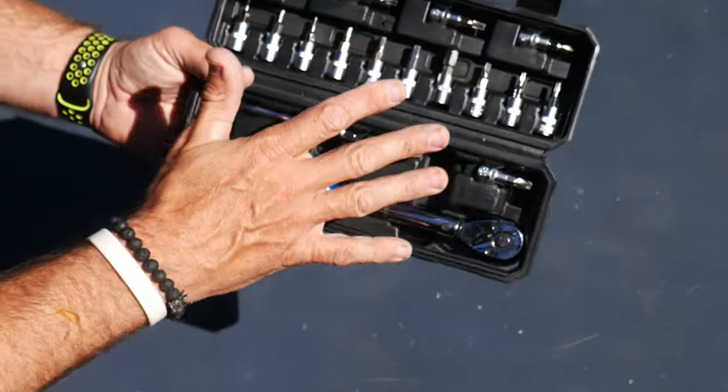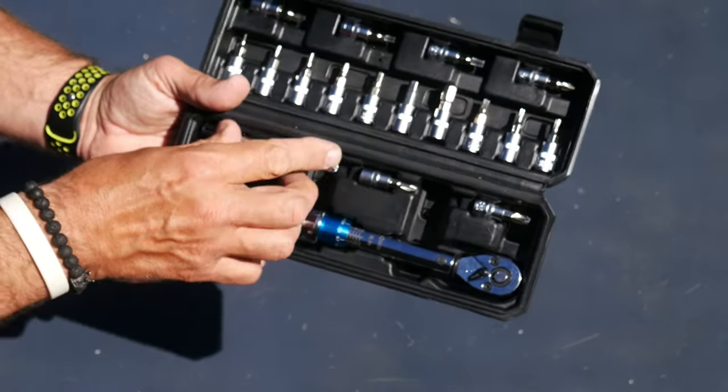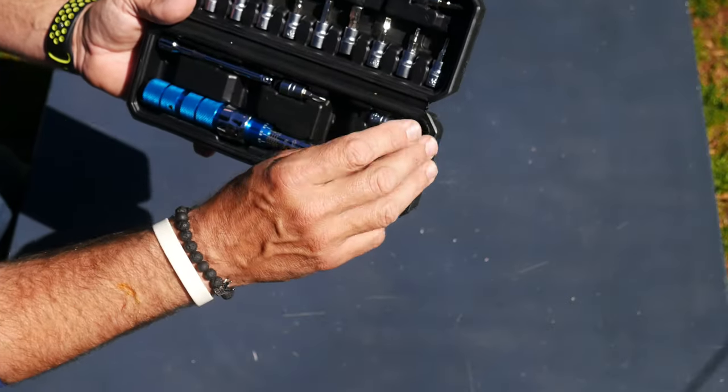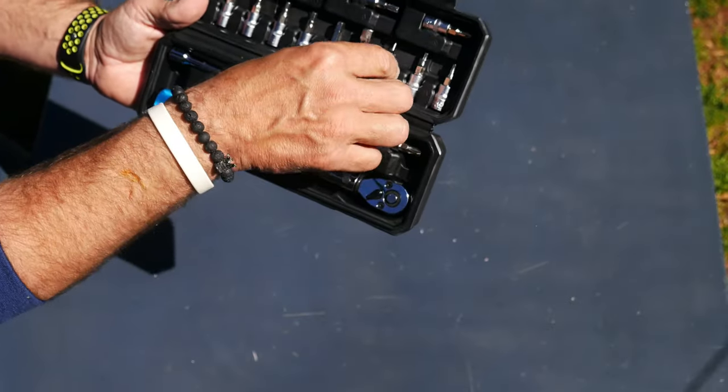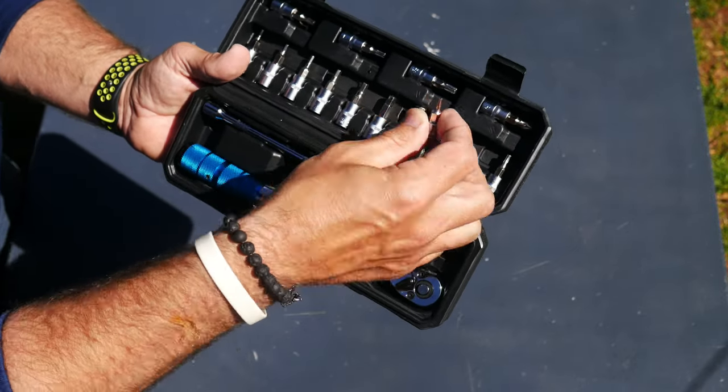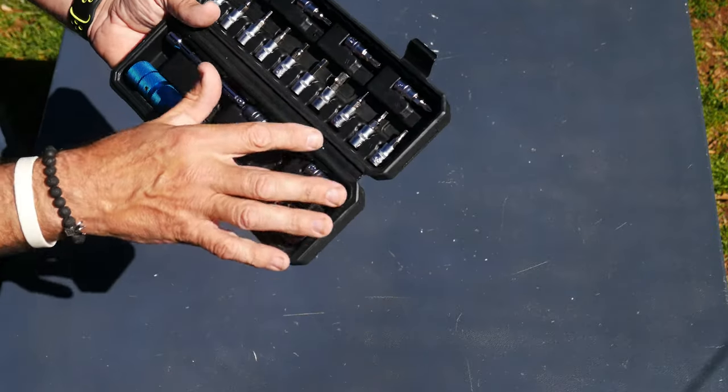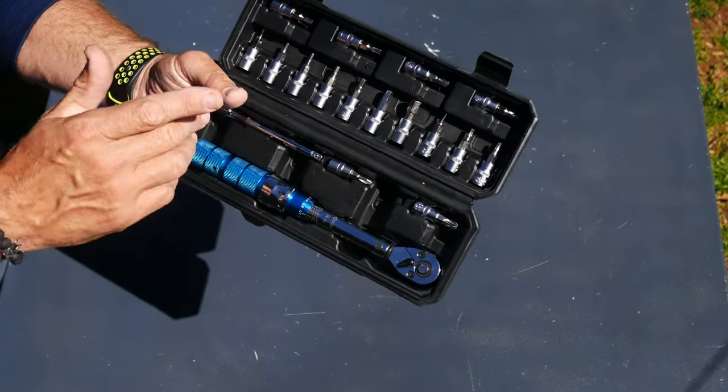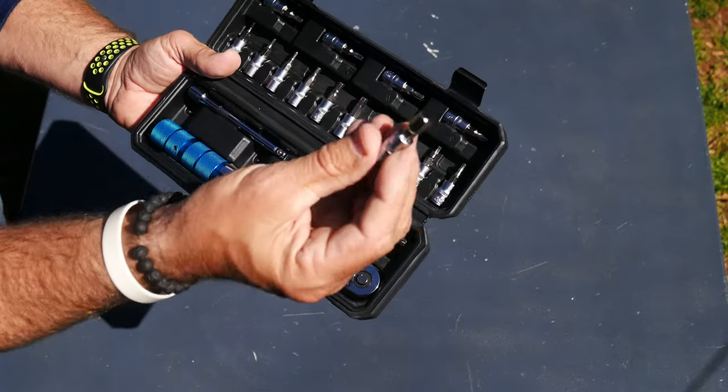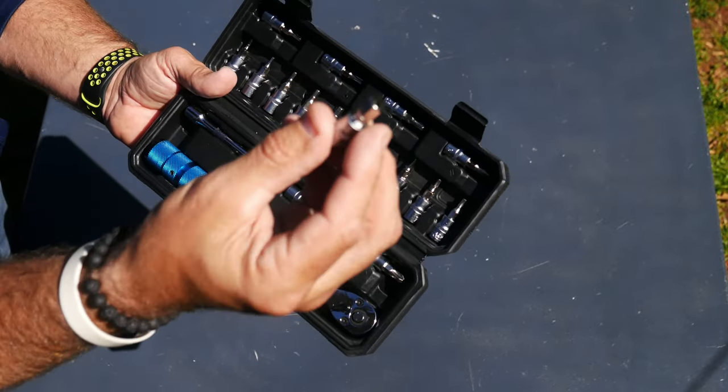This is technically a 16 or 17 piece set if you count the little extension piece. It has three different Phillips head settings, only one single flathead. For your Torx bits, you've got everything from a T10 Torx up to a T30, which is pretty standard. I've used everything here on my bike. That goes into the crank case, which is an H8.